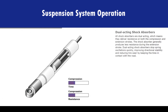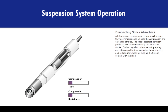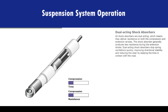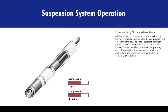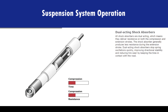All shock absorbers are dual-acting, which means they deliver resistance on both the compression and extension strokes. The shock absorber generally produces less resistance during the extension stroke. Dual-acting shock absorbers stop spring oscillations quickly, improving directional stability and reducing tire wear by keeping the tires in contact with the road.